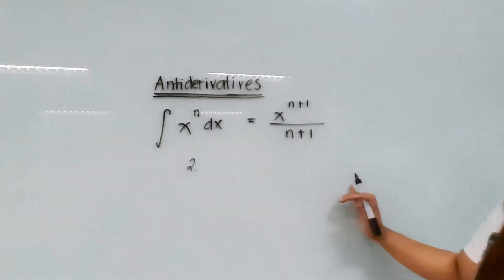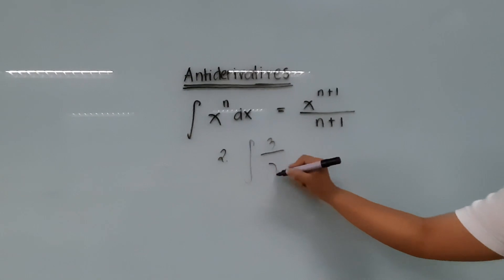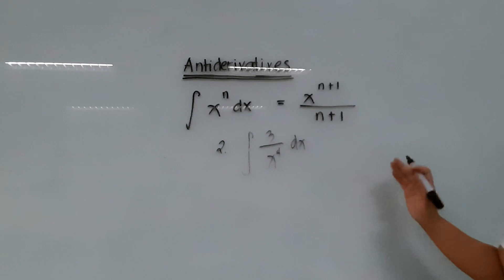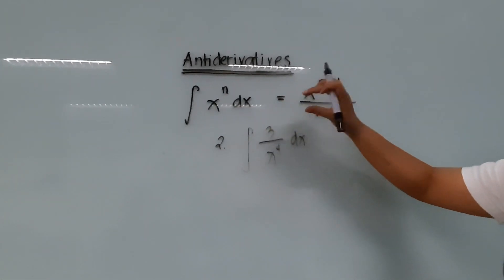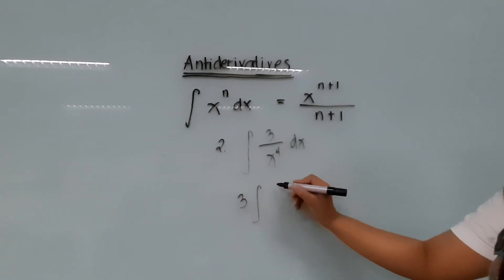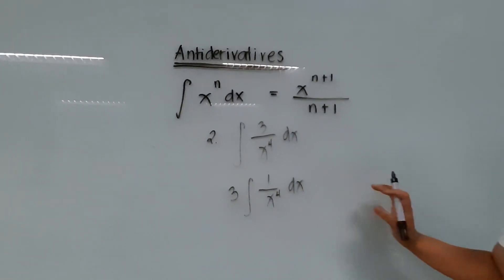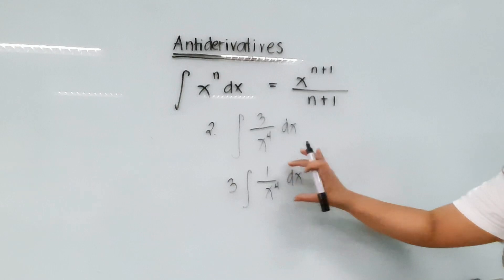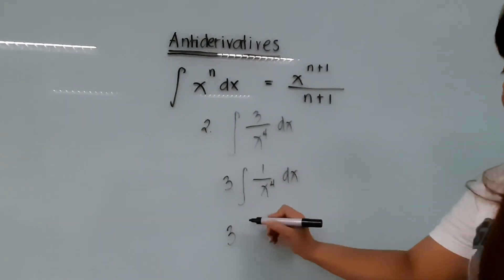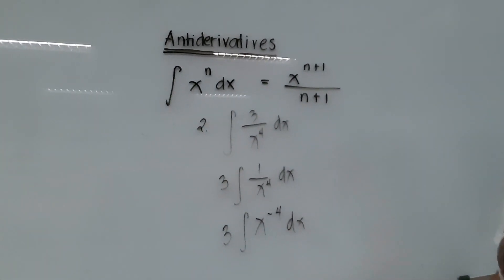Example number 2: the integral of 3 over x raised to 4, dx. The first thing to do is put the constant 3 outside the integral sign, giving 3 times the integral of 1 over x raised to 4, dx. Next, get the reciprocal of x raised to 4 so we can use the power rule. This becomes 3 times the integral of x raised to negative 4, dx.